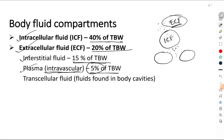Now apart from the interstitial fluid and the plasma, there is one more fluid called as the transcellular fluid. This transcellular fluid makes up a very little percentage of the extracellular fluid. Transcellular fluid is found in the body cavities.